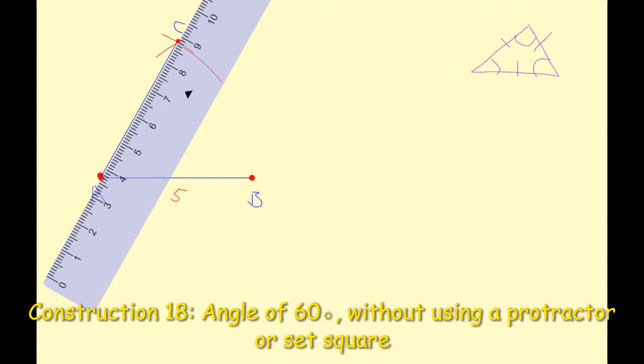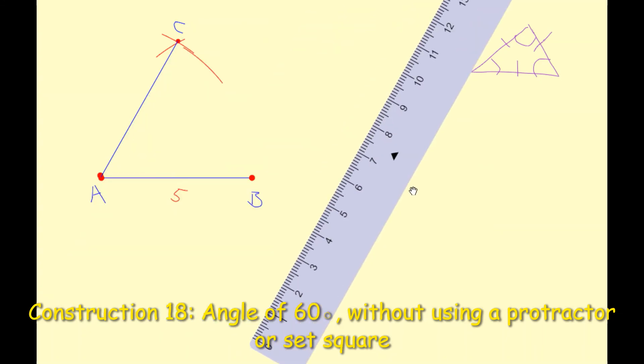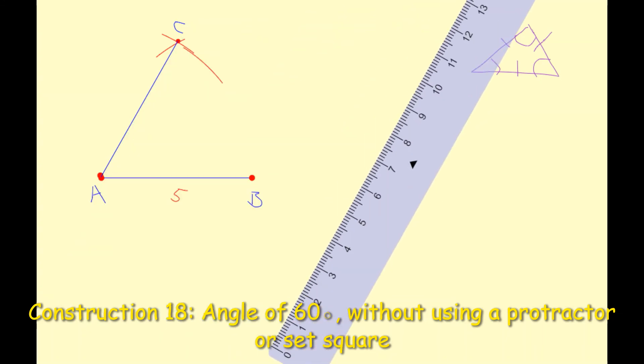Now I don't have to form the line segment from B to C because the question just wants us to construct an angle of 60 degrees and that is technically what I've now done.